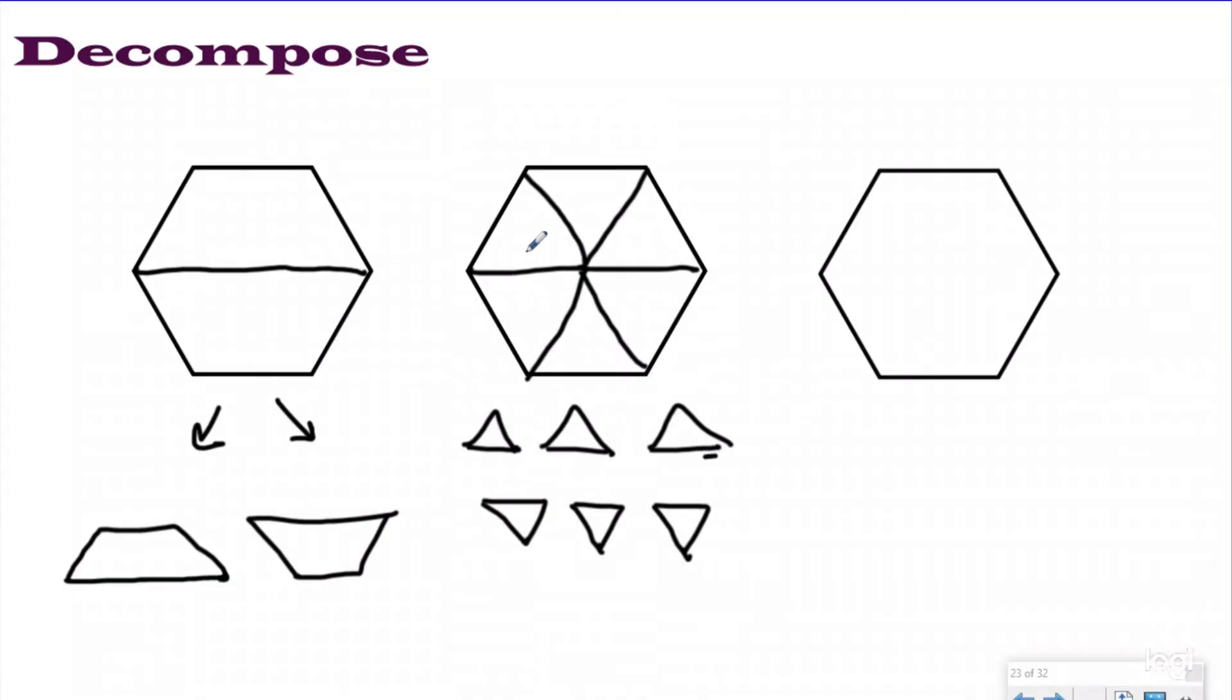Now, if I wanted to do a different way, and just like the number 10, there's a lot of different ways you can decompose it. I could split it up and decompose it into a trapezoid. And then if I drew these lines straight down here, I could actually have two triangles up top, a rectangle, and a trapezoid that make this shape up.